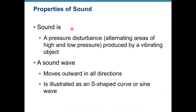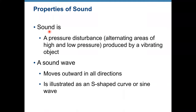Sound is a pressure disturbance produced by a vibrating object. It consists of alternating areas of high and low pressure. Sound can only be propagated through a medium — in a vacuum like outer space, sound cannot propagate. So sound needs some medium; it can be air or fluids. It is a mechanical wave.